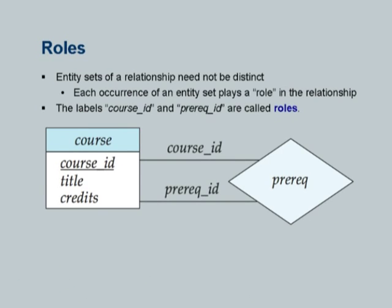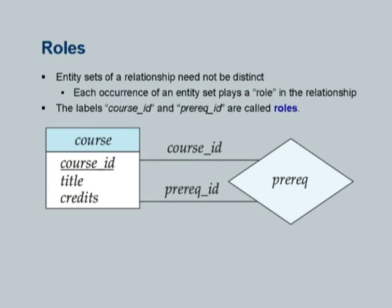We had several examples of relationships between the same entities, where a relationship uses the same entity multiple times. We discussed the father and mother relationship. If I had an entity set person, the relationship father is between a person and another person, looping back to the same entity set. Here is another example: courses and prerequisites, because a course may require a prerequisite. This is a relationship indicating which courses are prerequisites for each course. It is a binary relationship where both edges go back to course. I need to know which one is the course and which is the prerequisite.